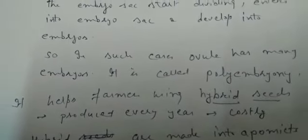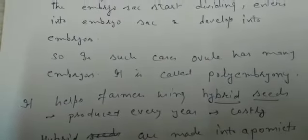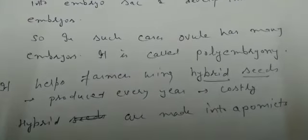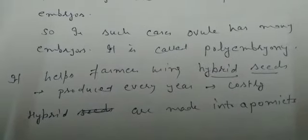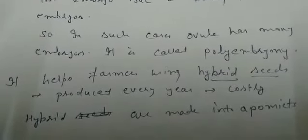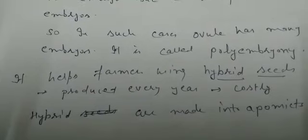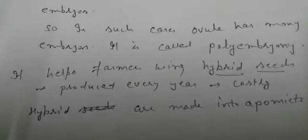Now, how do apomictic seeds and polyembryony help farmers? They have a very important role in farming. These days we are using hybrid varieties for most plants, fruits, and vegetables. But there is one major problem — hybrid seeds have to be produced every year, and second, these hybrid seeds are very costly, which puts a lot of burden on farmers.